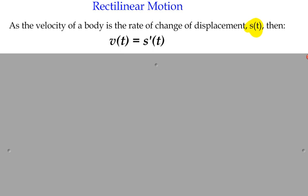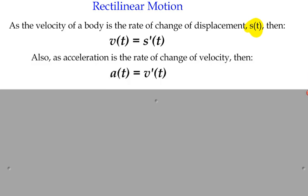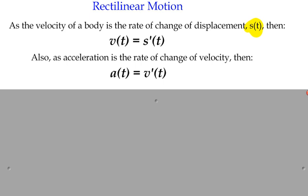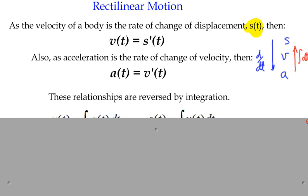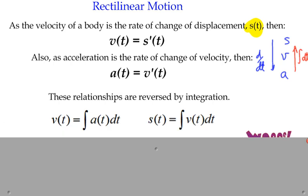If we then have our function of velocity and think about metres per second per second — rate of change, how quickly is the velocity changing — that's what we know as acceleration. Acceleration is the rate of change of velocity, so we can differentiate that. We can differentiate to get from displacement to velocity, and velocity to acceleration. We can also integrate with respect to time to create a velocity function from acceleration, or integrate a velocity function to get our displacement function.